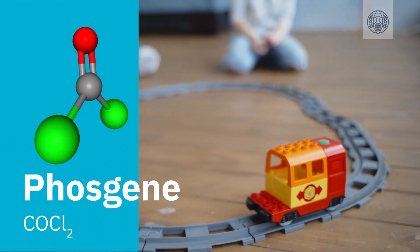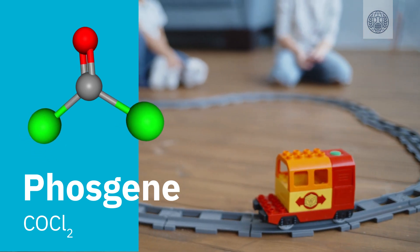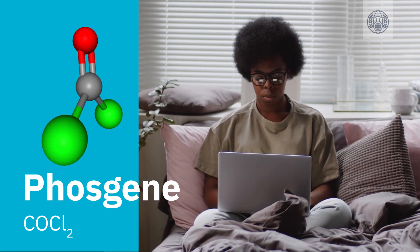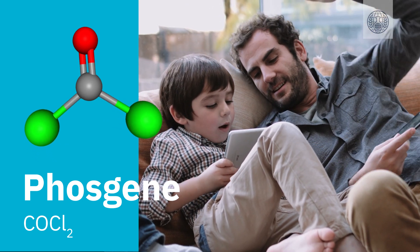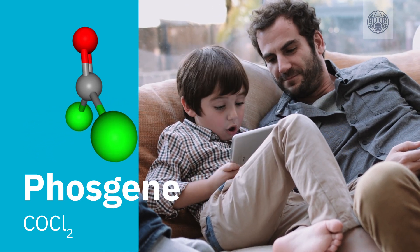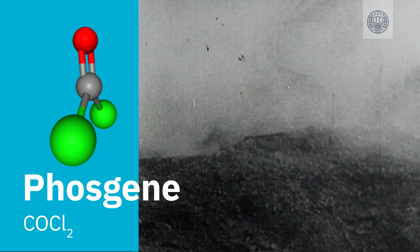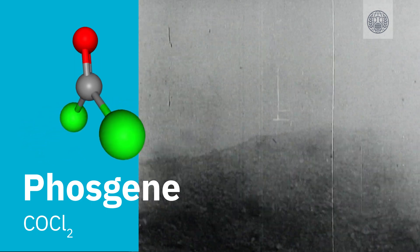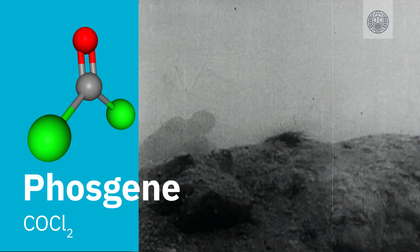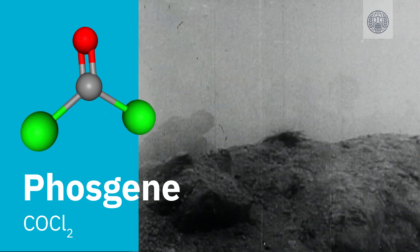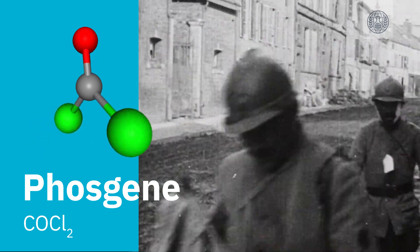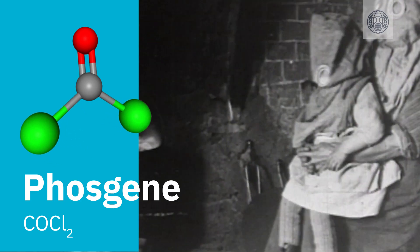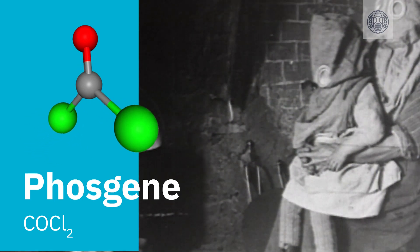Phosgene is a chemical used widely in plastics, and is also used to manufacture polyurethane, a flexible foam used in furniture and mattresses. But in World War I, phosgene gas was used as a choking agent, and was responsible for most of the war's chemical-related deaths. Like many chemical warfare agents, it works indiscriminately, affecting soldiers and civilians alike.